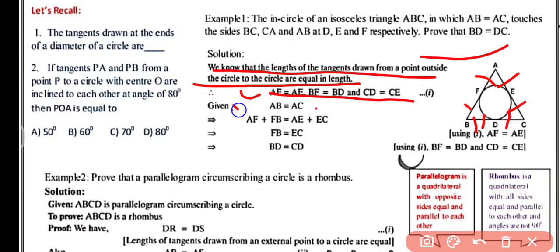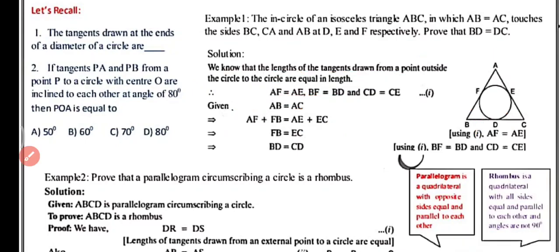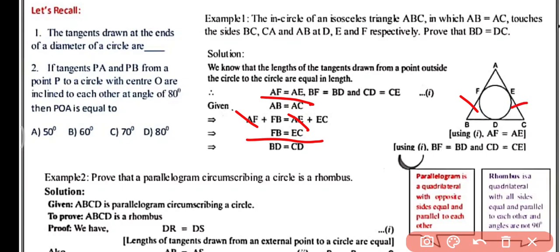We are given that AB equals AC since triangle ABC is isosceles. AB has two parts: AF plus FB, and AC has two parts: AE plus EC. Using the relation AF equals AE, we can cancel these two terms. We are left with FB equals EC. Now FB can be written as BD, and EC can be written as CD. Therefore BD equals CD.